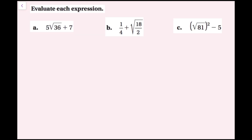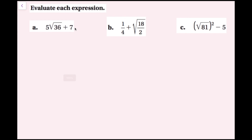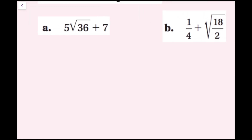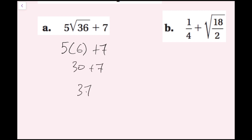For this example, we're going to evaluate each expression. For part a: 5 times the square root of 36, plus 7. First, check for parentheses — none here. Note that anything under the radical is treated like parentheses. Next, do exponents and roots: the square root of 36 is 6, so the expression becomes 5 times 6 plus 7. Then multiplication: 5 times 6 is 30. Finally, 30 plus 7 gives 37.